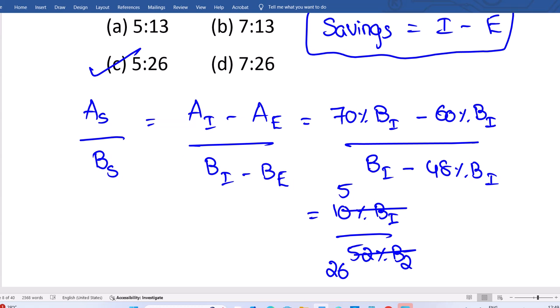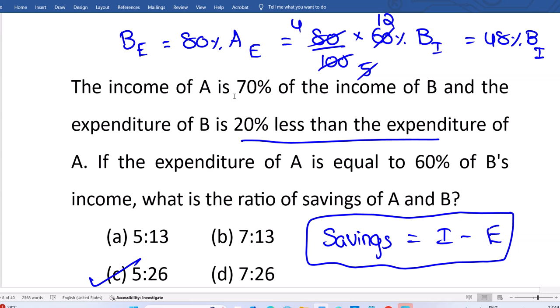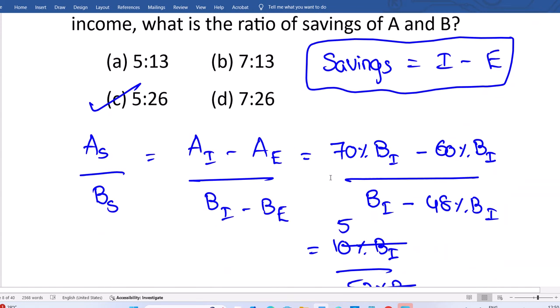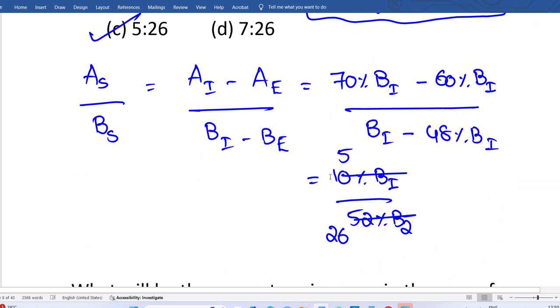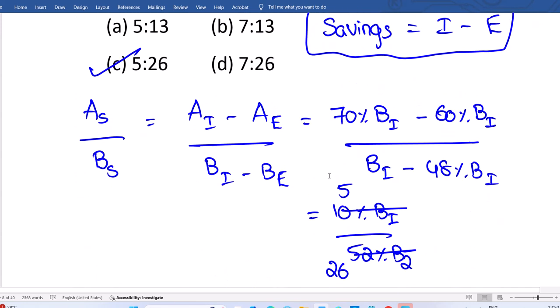You can do in terms of B income. Some people will convert all in terms of A expenses, it's all up to you. I converted here all in terms of B income only because here A income is in terms of B income, A expenses is in terms of B income. Now I'm converting all four terms in terms of B income, so with that we got 5 out of 26. 5 is to 26, right?